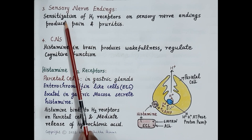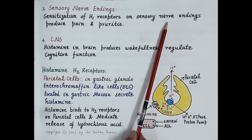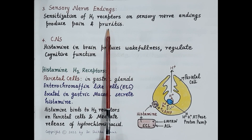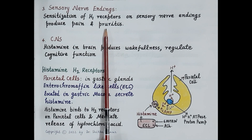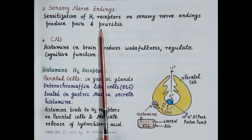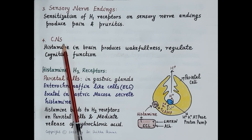The effect of histamine on sensory nerve endings: histamine sensitizes H1 receptors on sensory nerve endings in the skin, producing pain and pruritus — pruritus means itching. Pain and pruritus are also very important features of inflammation and allergy. Regarding the effect of histamine on the central nervous system: non-mast cell histamine is found in the brain.